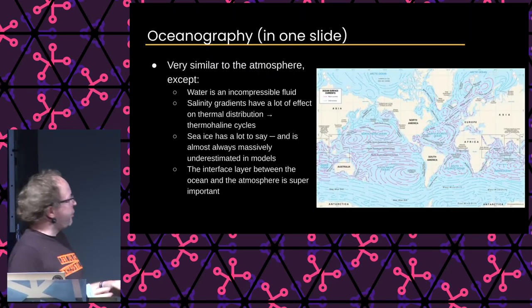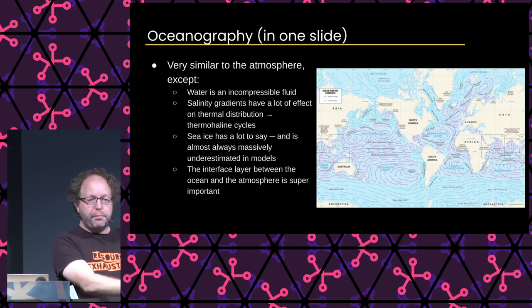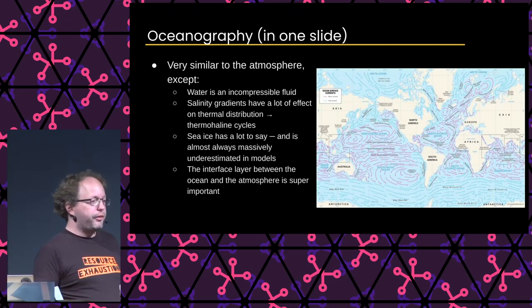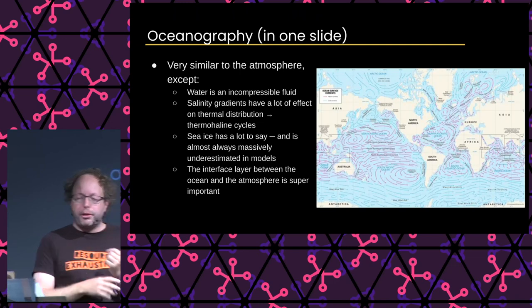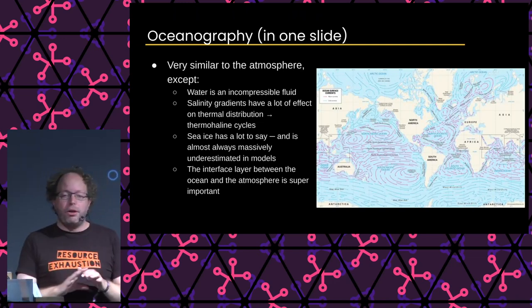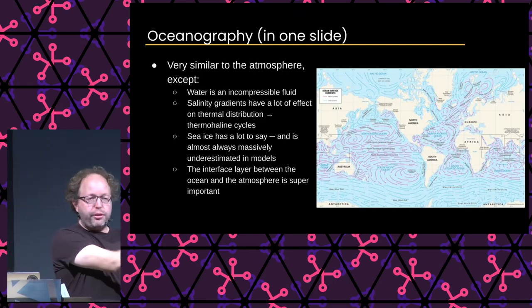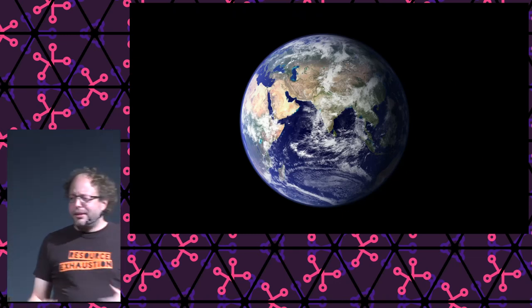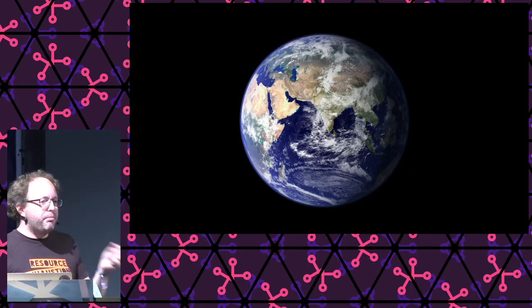Oceanography works in similar ways, except there we have an incompressible fluid, and salinity gradients have a lot of effect — how much salt is in the bit of water you're looking at. This is why we have things like thermohaline cycles, like the Gulf Stream. Sea ice has a lot to say — I talked with an oceanographer recently who gave a ballpark estimate of tens to hundreds of terajoules being unaccounted for every day because the sea ice models are just not quite good enough. And the interface layer between the water and the air matters a huge amount because of the transference of energy. That was the 10-minute meteorology super simplified version, because I want you to understand how many different forces and dynamics are going on here.